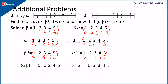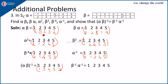Now we find (alpha beta) inverse. Take the alpha beta result and swap the rows. Looking at the second row of alpha beta to get the first row of its inverse: for 1 it is 1, for 2 it is 3, for 3 it is 4, for 4 it is 5, for 5 it is 2. So (alpha beta) inverse maps: 1 to 1, 2 to 3, 3 to 4, 4 to 5, and 5 to 2.